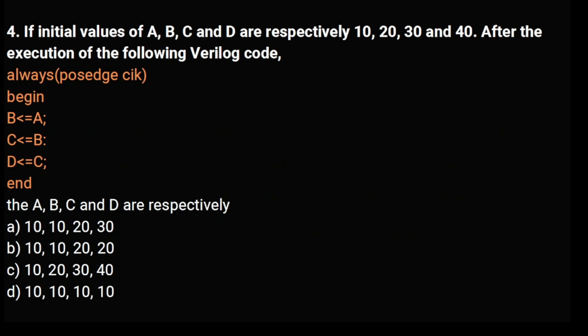Next question: If the initial values of A, B, C, and D are respectively 10, 20, 30, and 40, after the execution of the given code, what would be the values of A, B, C, and D respectively?